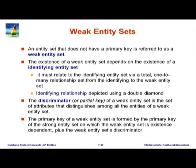In part 2 we are going to look at more features of ER diagrams. The first feature is weak entity sets, which is sometimes a confusing concept. Conceptually, a weak entity set is any entity set that does not have a primary key. Another way to think about it: a weak entity set is one where the existence of an entity depends on the existence of another entity, which is in a set called the identifying entity set.